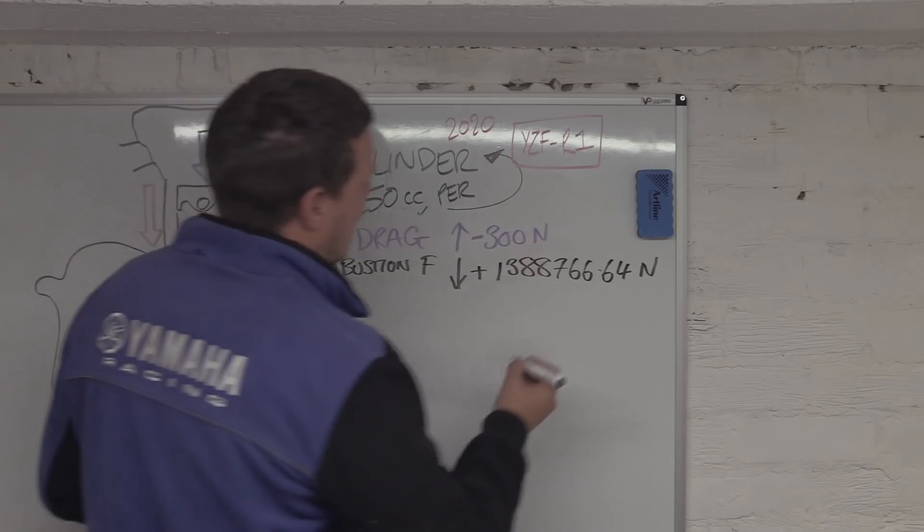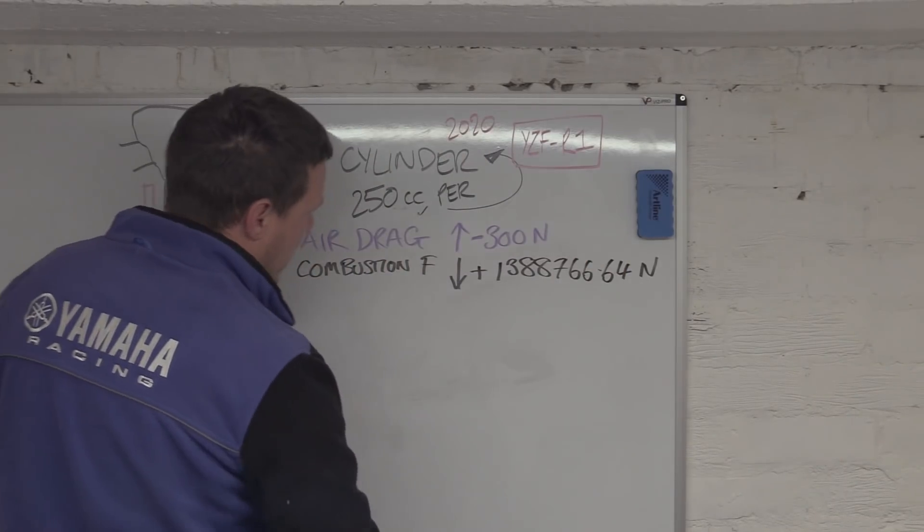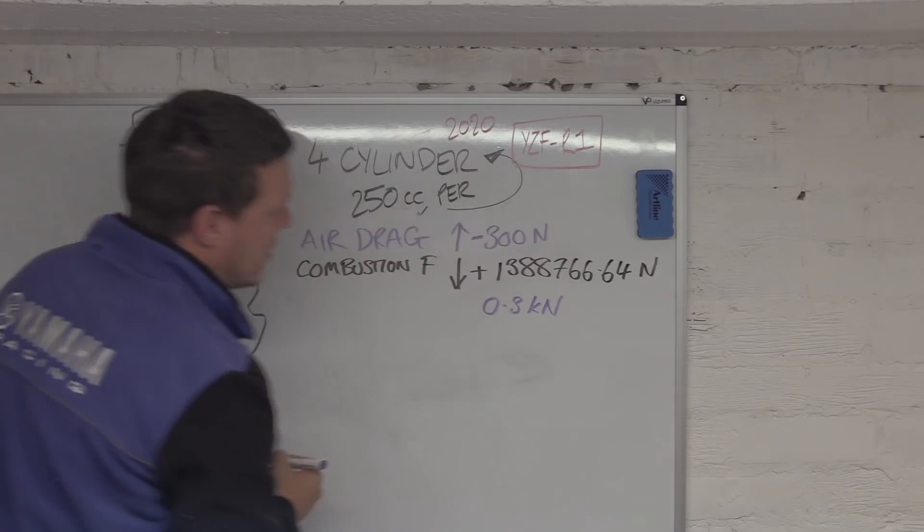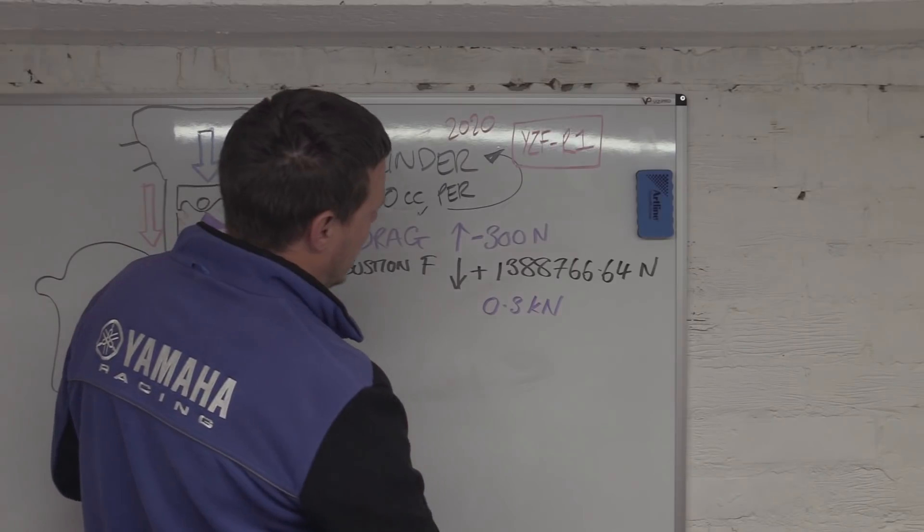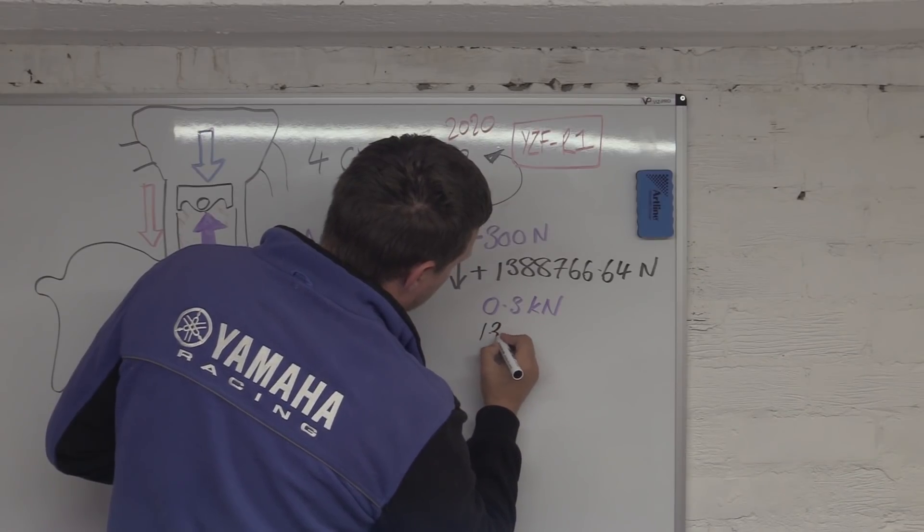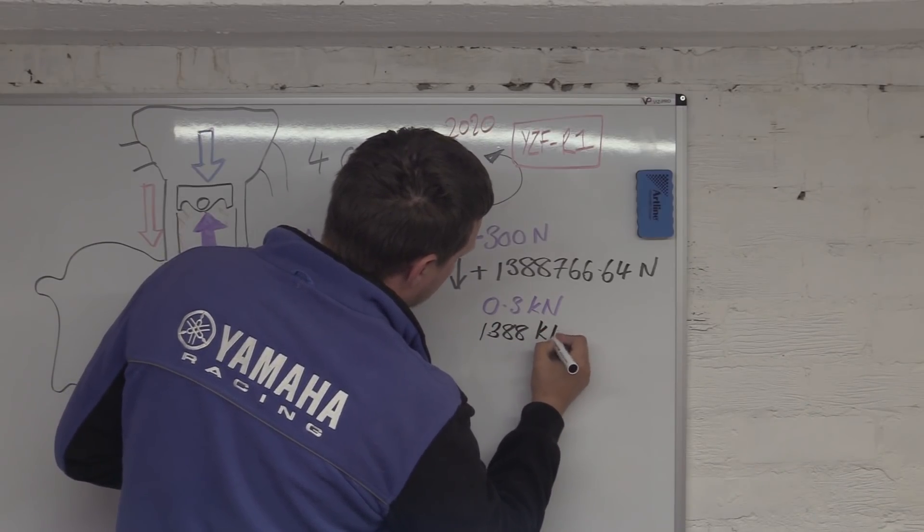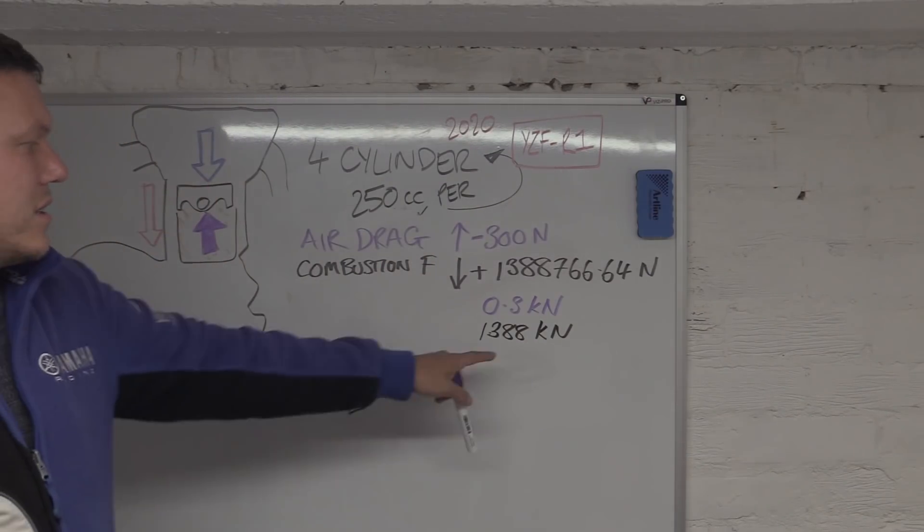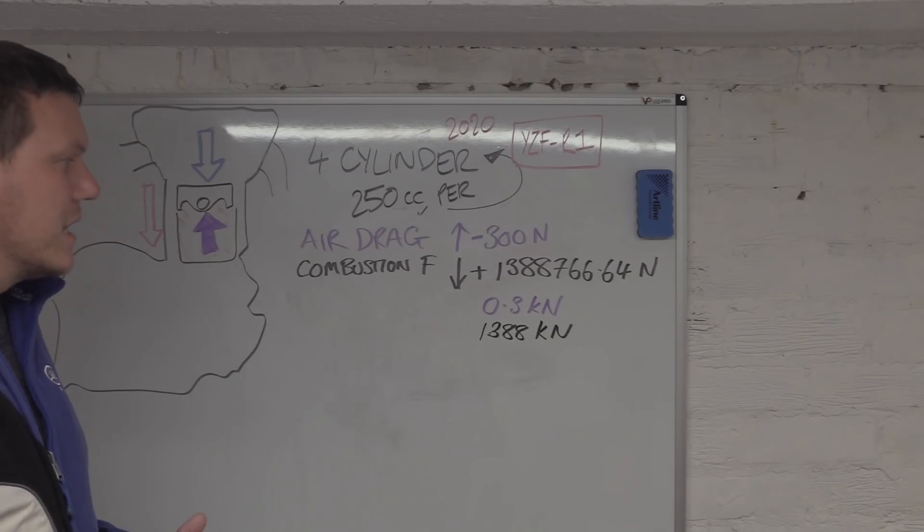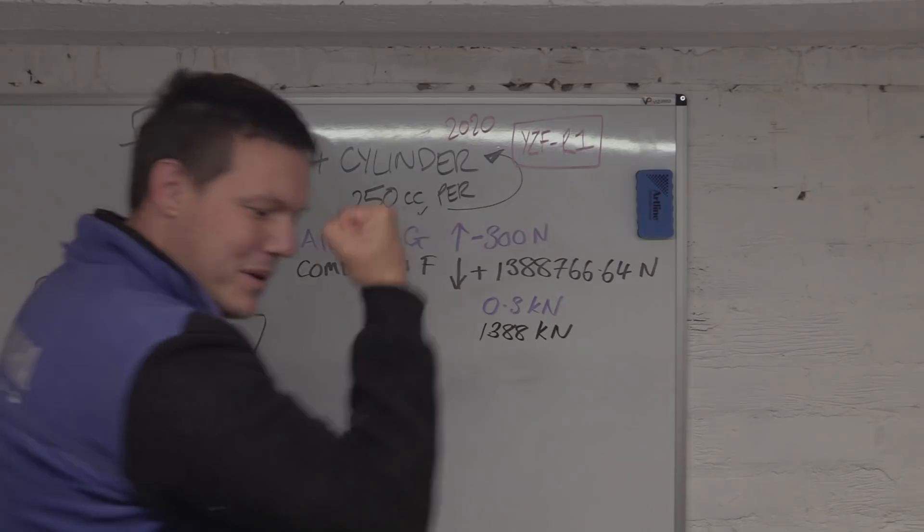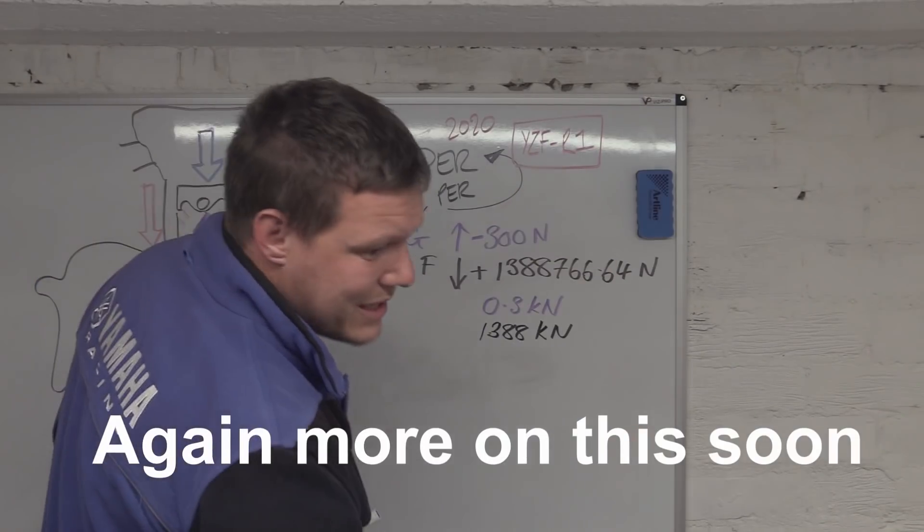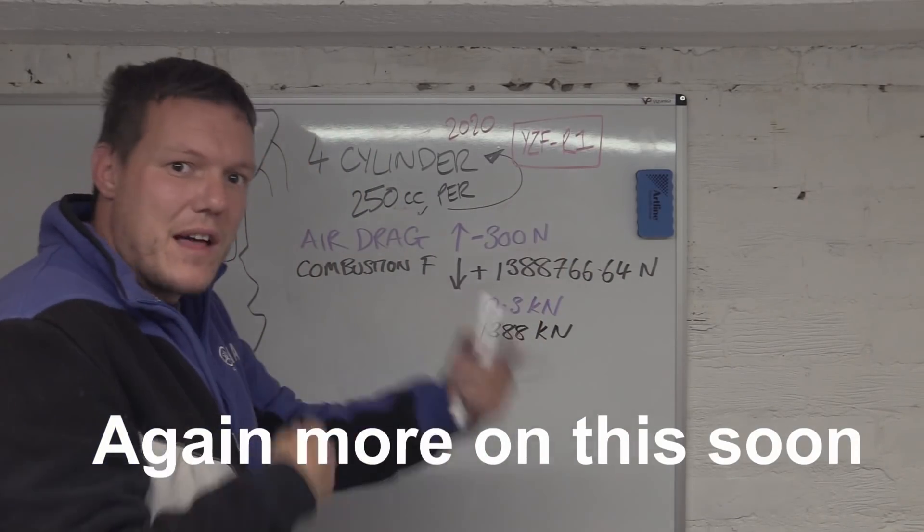One point three million newtons, that's what happens when you add all of that up. You might think of that and go, holy shit. Now we've got 0.3 kilonewtons here, and then this one is 1,388 kilonewtons. You might say, fuck, that's an awful lot of force, 1,388 kilonewtons.